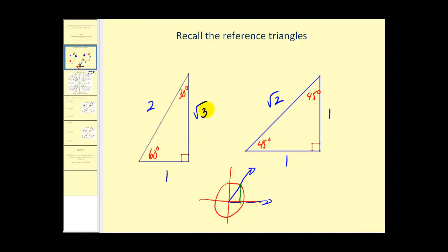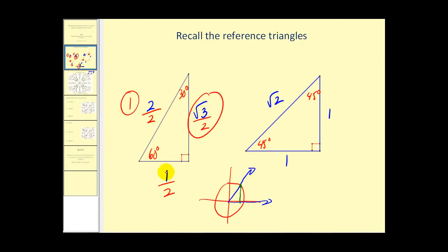Going back to our reference triangles, if we take the hypotenuse of the 30-60-90 triangle and make it equal to one by dividing by two, we divide everything by two. Two divided by two equals one, the longer leg becomes square root three divided by two, and the short leg becomes one-half. These are the values we'll see on the unit circle, because the hypotenuse of the reference triangle corresponds to the radius of the unit circle.